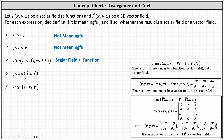Number four, we begin with the divergence of the function f. We don't determine the divergence of a function — we determine the divergence of a vector field. Number four is not meaningful. Number five, we begin with the curl of the vector field F, which results in another vector field. And then we find the curl of that vector field, which results in another vector field. Number five is meaningful; the result is a vector field.